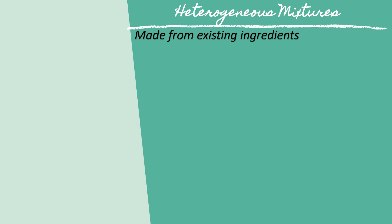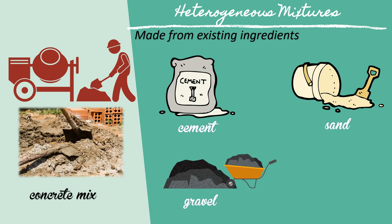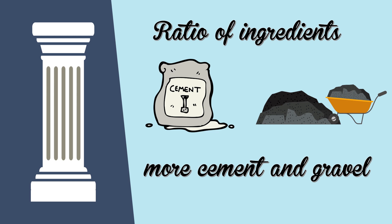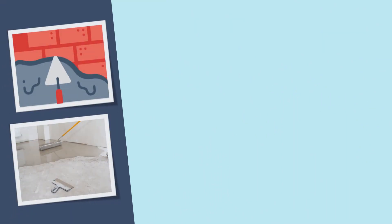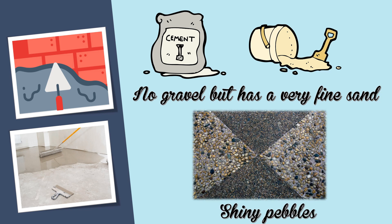Mixtures can also be made from existing ingredients. For example, a concrete mix has the following ingredients: cement, sand, gravel, and water. The ratio of each ingredient differs depending on how the concrete would be used. Concrete mix for making pots has much more cement and gravel. Concrete for making smooth walls and floors has no gravel but has very fine sand. Shiny pebbles or glass beads are sometimes mixed into concrete to make patterns on walls or floors.